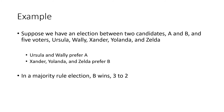Let's look at some examples. We have an election between candidates A and B with five voters: Ursula, Wally, Zander, Yolanda, and Zelda. Ursula and Wally prefer candidate A; Zander, Yolanda, and Zelda prefer candidate B. Under majority rule, B gets three votes and A gets two votes, so B wins three to two.